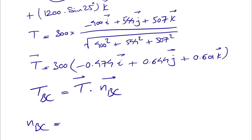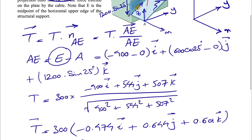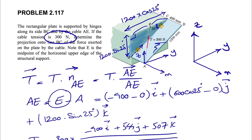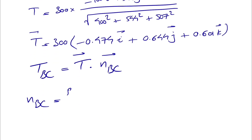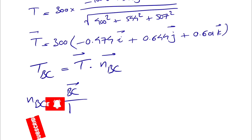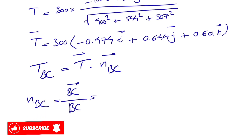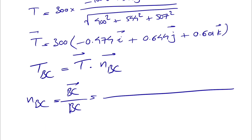We find n_BC as vector BC over its magnitude. For this we need the coordinates of the endpoint C minus the coordinates of B, and that way we get vector BC. We just need to find the scalar components from there.